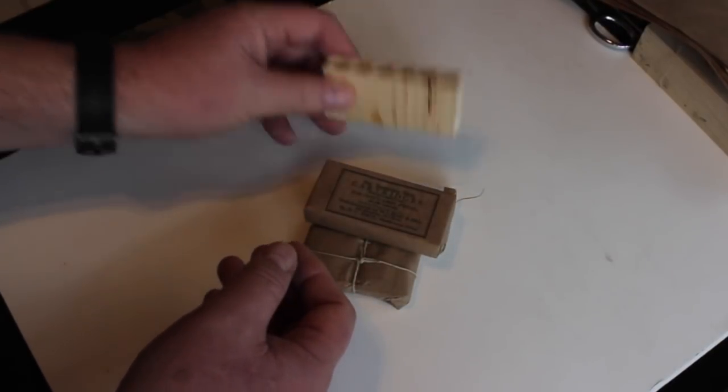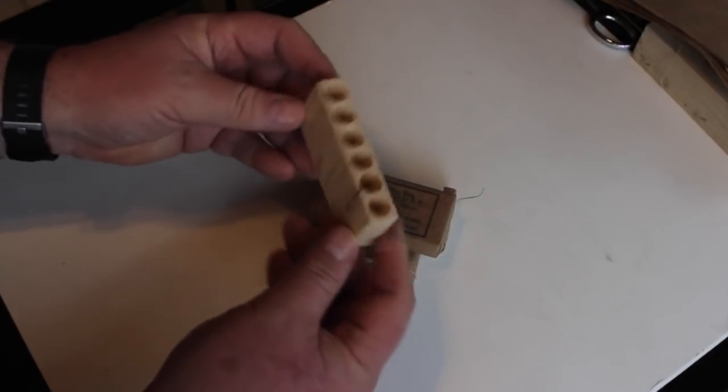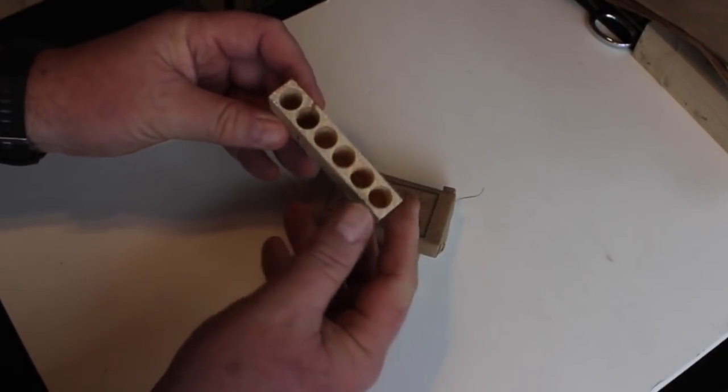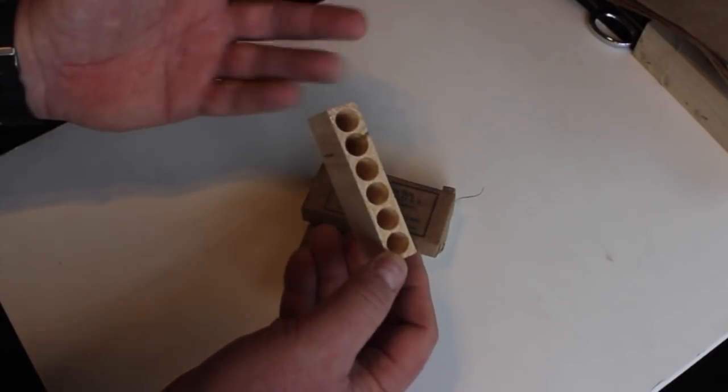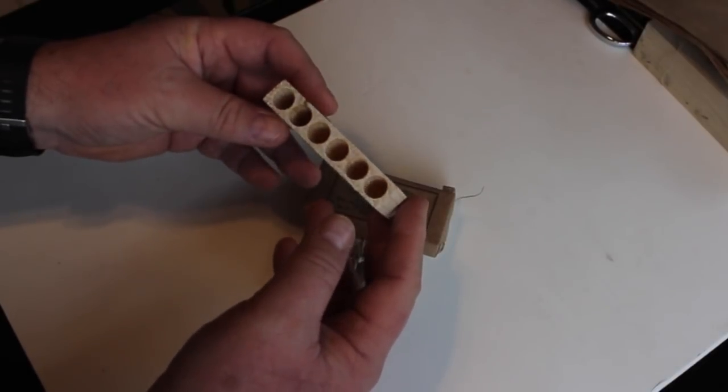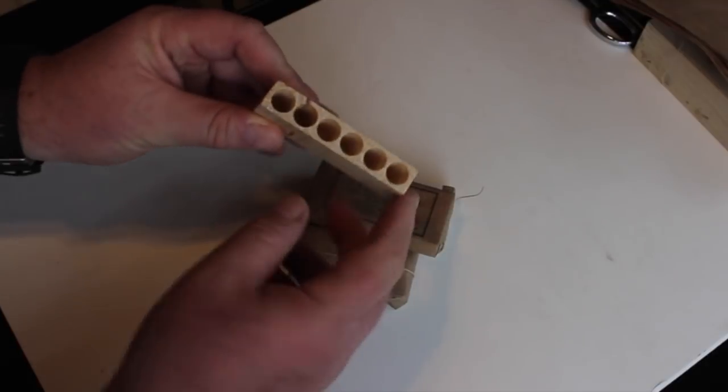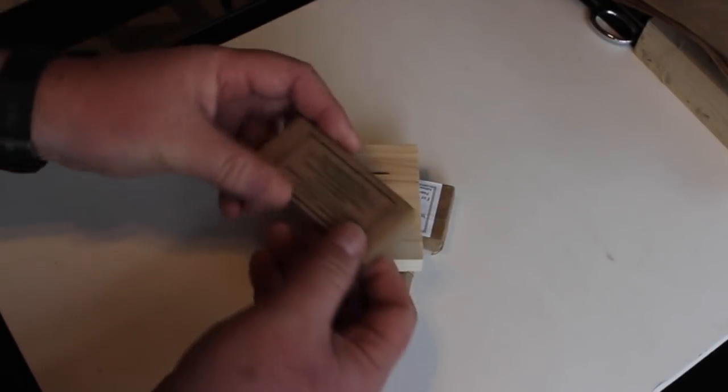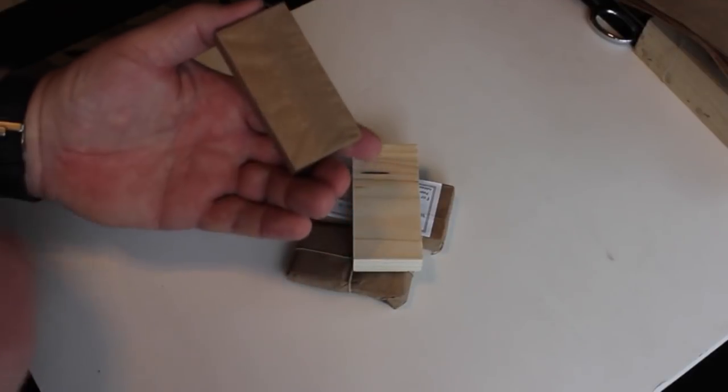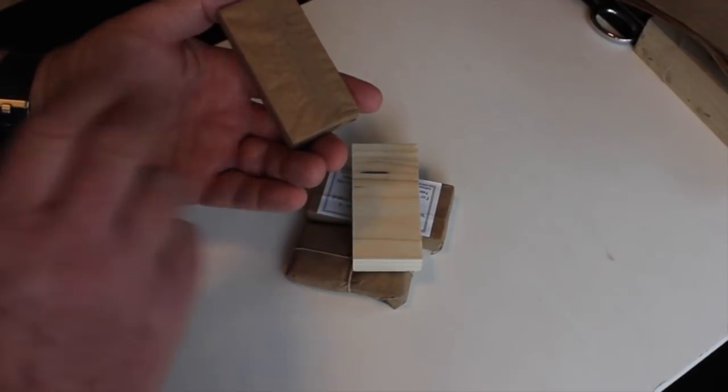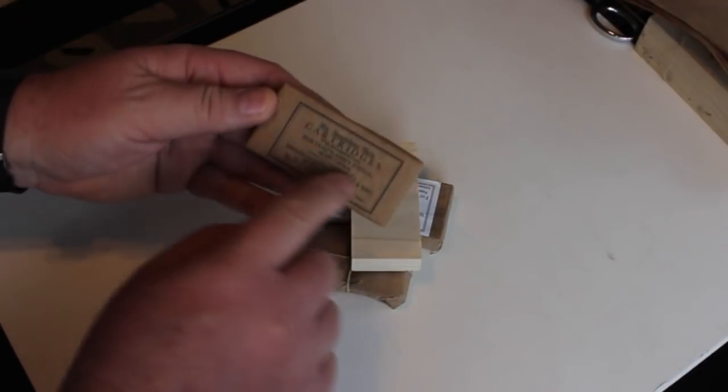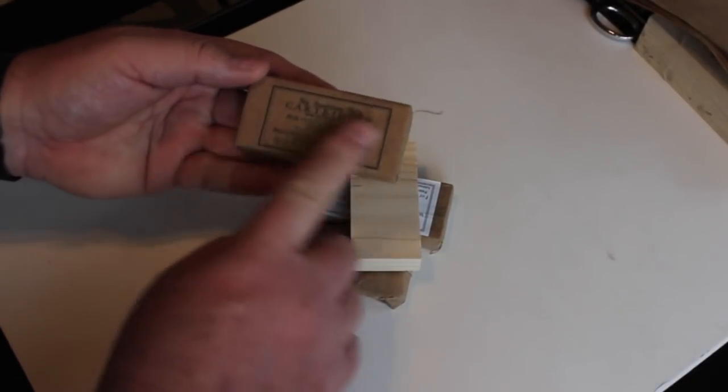But probably the most common type that was used in a block was like this. Just a very lightweight wood, usually poplar, or excuse me, basswood or pine that was drilled out to accept the cartridges. And then they were wrapped inside a paper wrapper. As a rule, when they were done in a block like this, the wrapper also held the label.